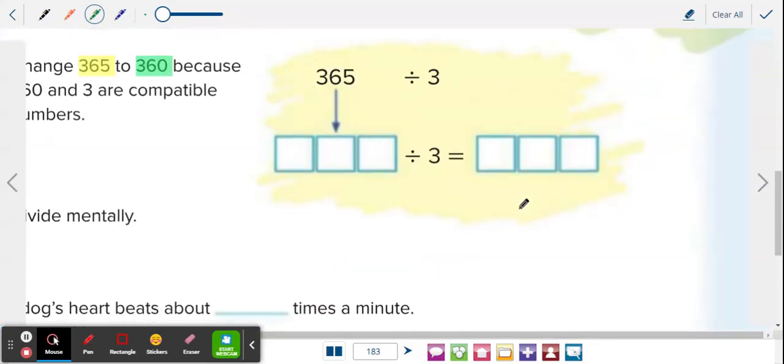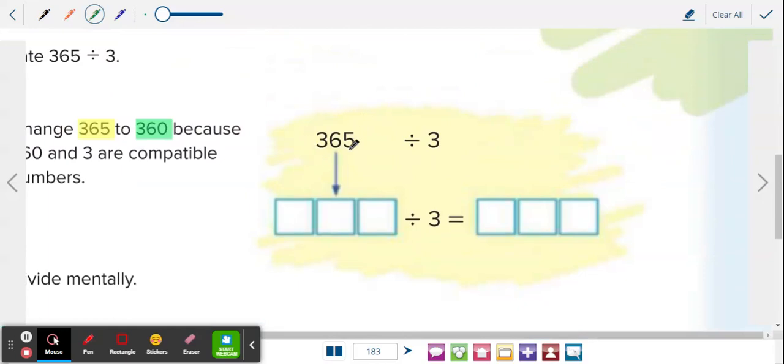So in this division 365 divided by 3, the first step is to look at the divisor which is 3. I will teach you one trick.